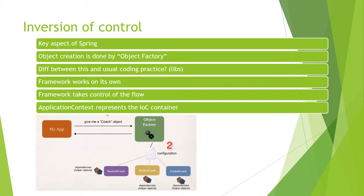The first thing we're going to talk about today is inversion of control — an important aspect of Spring. Let's say you're writing normal code and you use some libraries. Your code goes normally, and then at some point you need to call a function that's not in your own code — you're using somebody else's library. But you have all the flow: you're doing something, call a function, then it's back to you. But frameworks work differently.